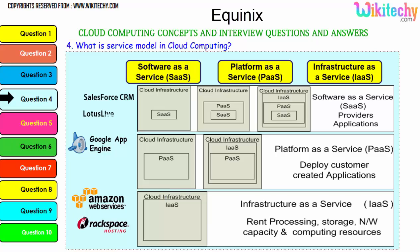Further explaining the models: software as a service has the cloud infrastructure, software placed in the operating system, placed in the infrastructure. For platform as a service, the platform is always given, placed in your server — you can put any application or software you want. For infrastructure as a service, a server is given to you; whatever OS you want, you can put it; whatever application you want, you can put it. Examples include Lotus Live and Salesforce CRM for SaaS; Windows Azure and Google App Engine for PaaS; and Amazon Web Services and Rackspace hosting for IaaS.